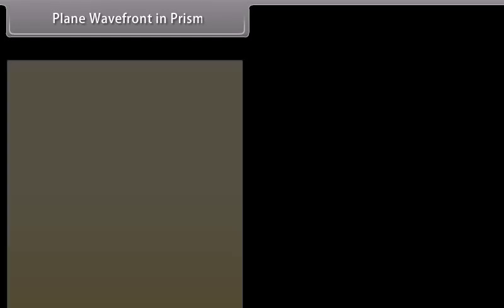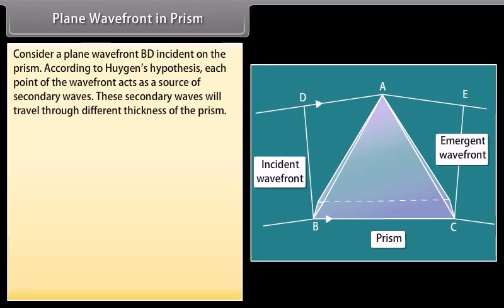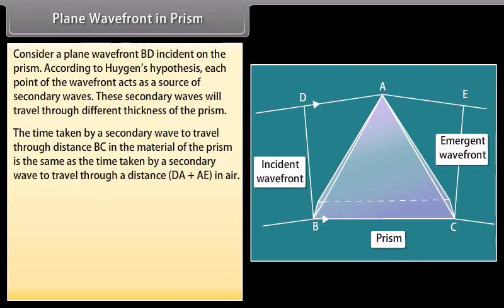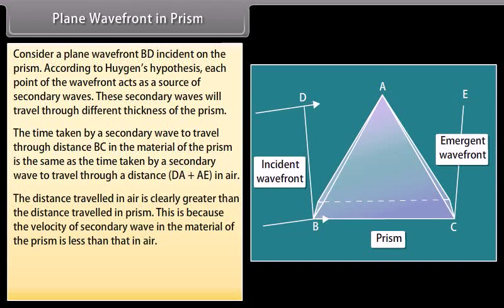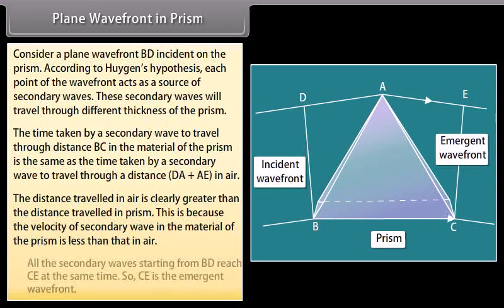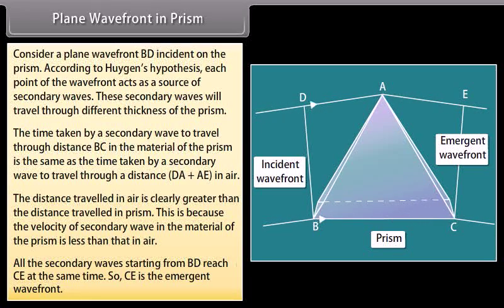Plane wavefront in prism: consider a plane wavefront BD incident on the prism. According to Huygens' hypothesis, each point of the wavefront acts as a source of secondary waves. These secondary waves travel through different thicknesses of the prism. The time taken by a secondary wave to travel through distance BC in the material of the prism equals the time taken to travel through distance DA plus AE in air. The distance travelled in air is greater than in the prism because the velocity in the prism material is less than in air. All secondary waves from BD reach CE at the same time, so CE is the emergent wavefront.